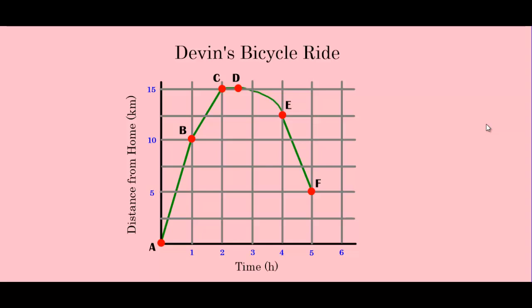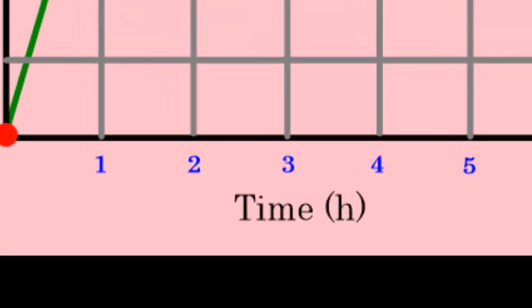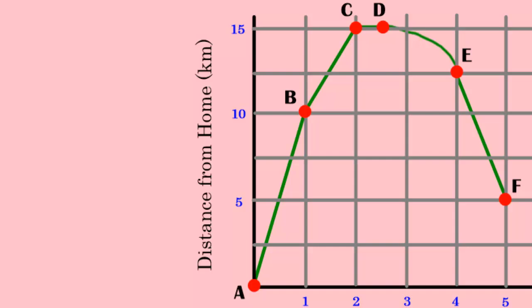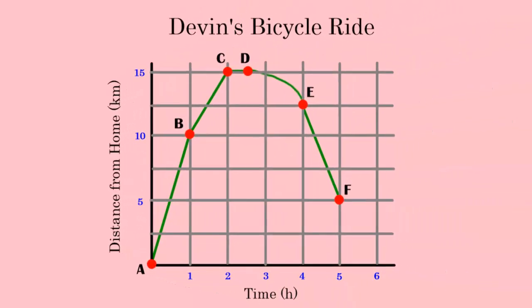Here we see an example of Devon's bicycle ride. If we take a look at this graph, notice how time is now in hours and our distance from his house is in kilometers. We've put a little bit of a story to what this graph represents. Each dot represents a moment in time where Devon has recorded his distance from his house.